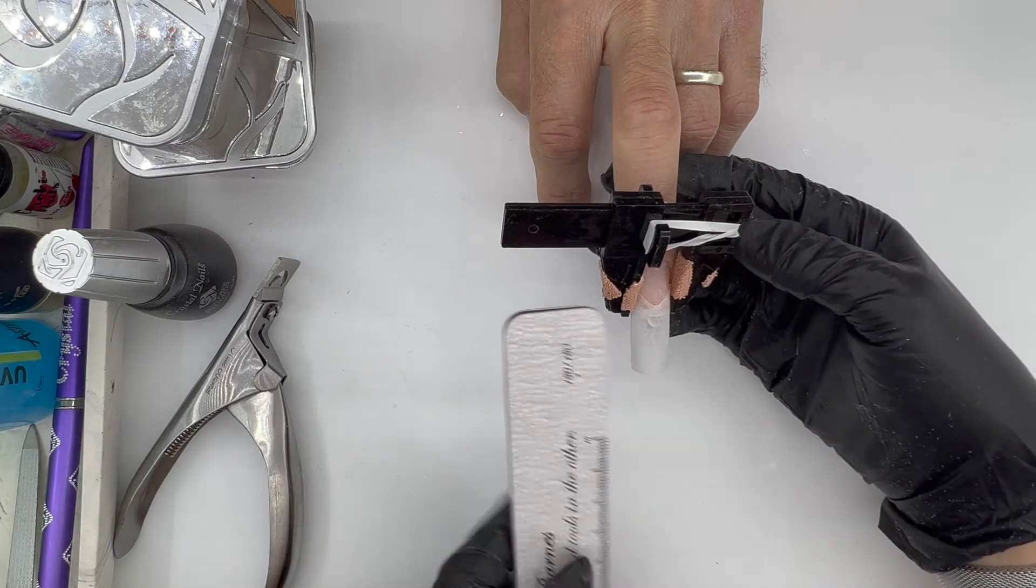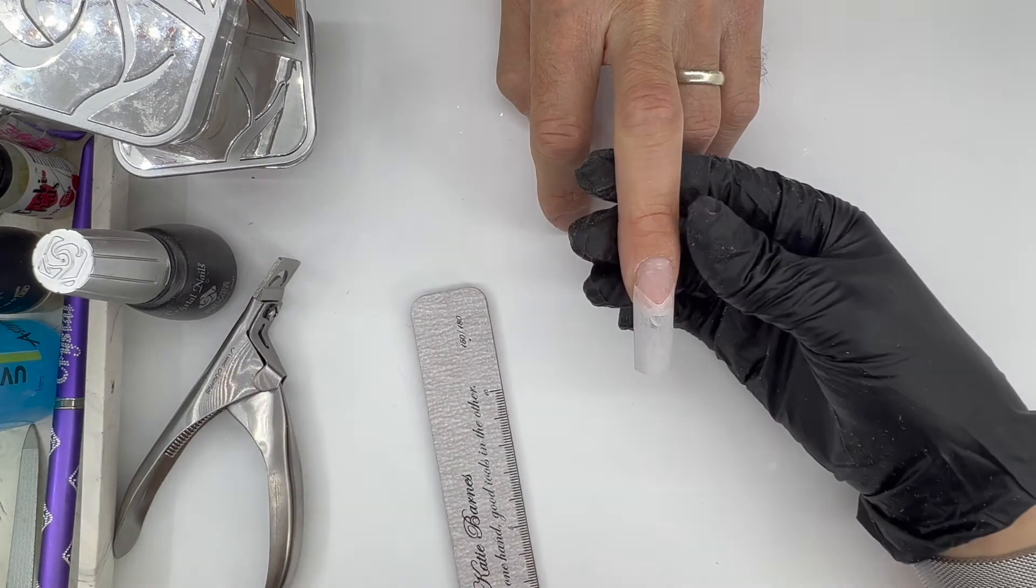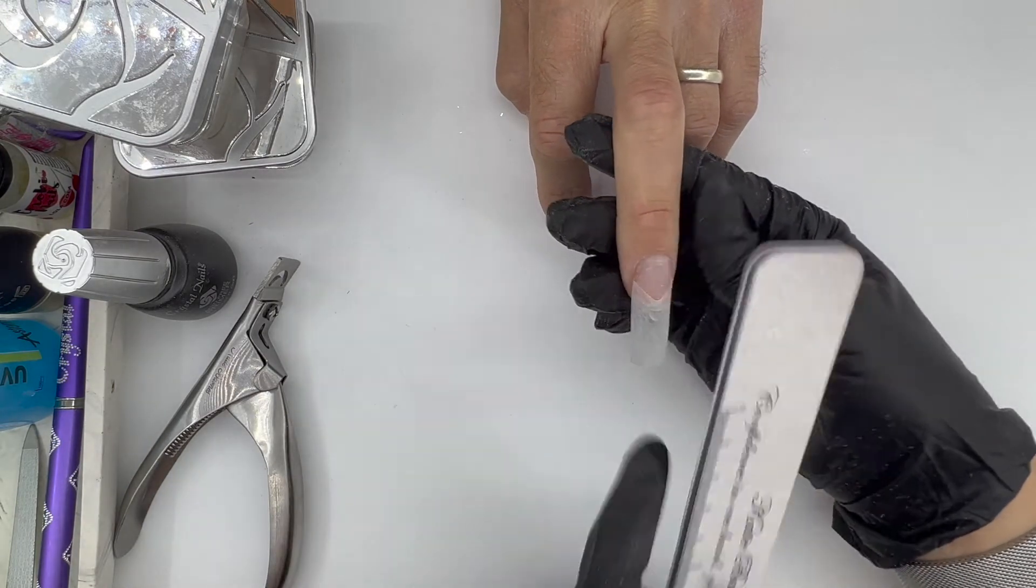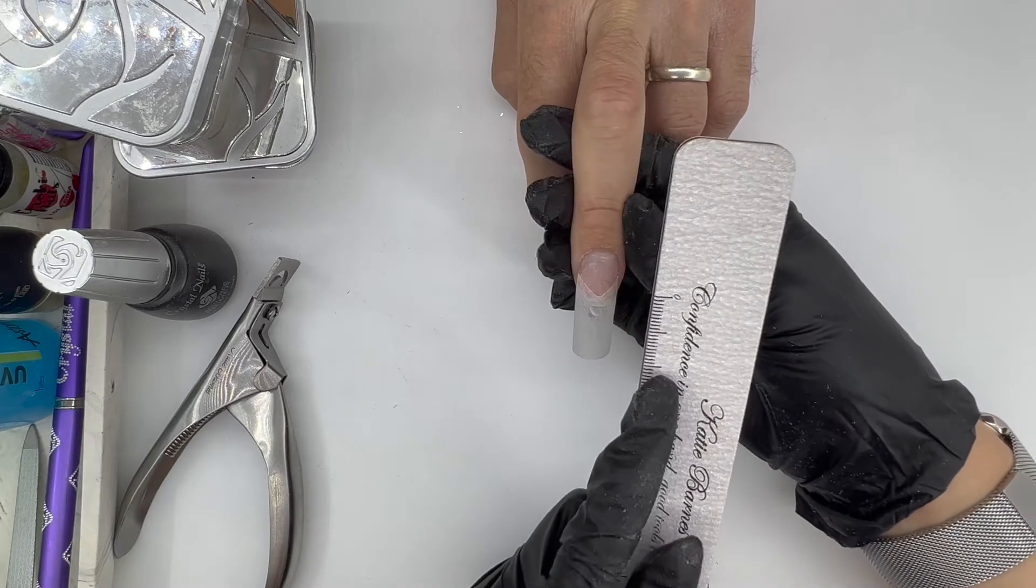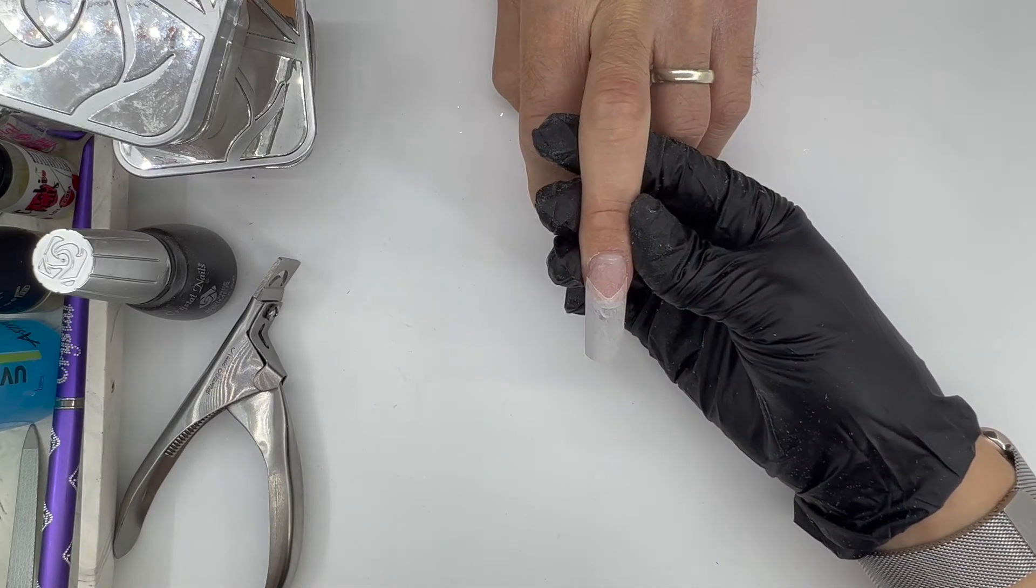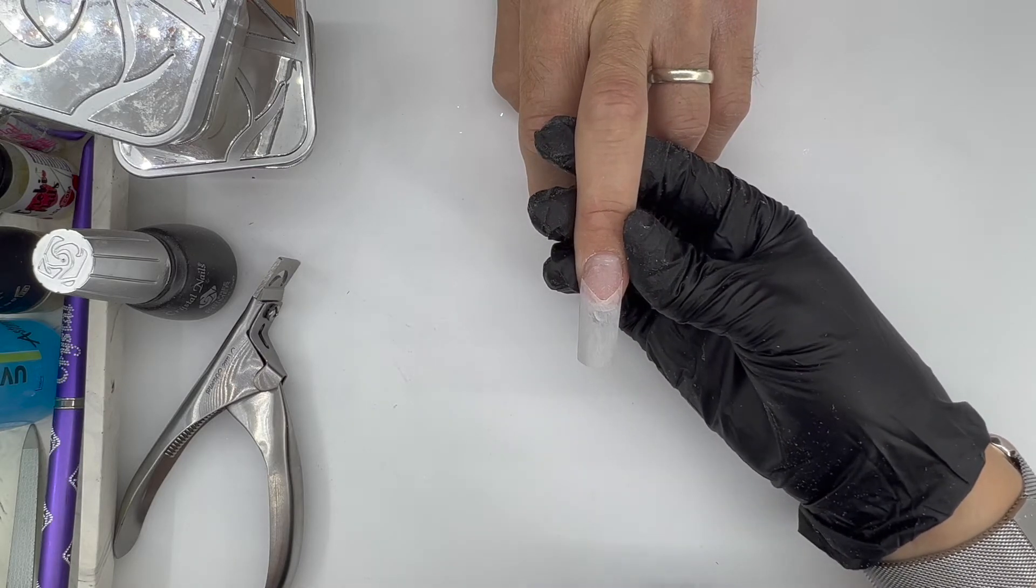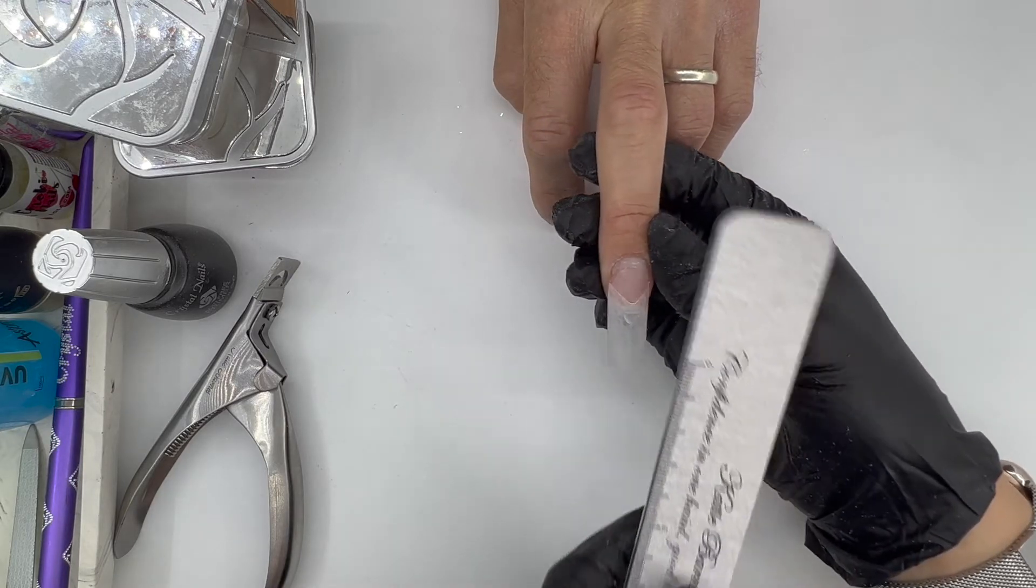With the tips, we want to check the length we need for that required free edge shape as well. So the more you practice, you will get to know your model's nails, so you know how long they are naturally, and you will know what length tip you need to apply.